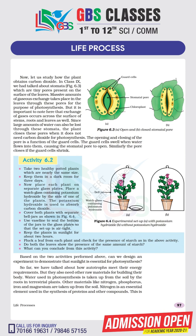Now, in the plant there are stomata — tiny pores on the leaves. There is a small opening called stomata. They help in the exchange of gases and allow the plant to take in carbon dioxide. As we can see on page number 97, there is an activity showing that if we keep some plants in water and observe the gas exchange, we can understand this process.